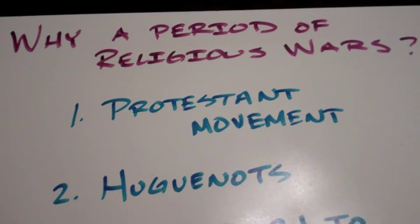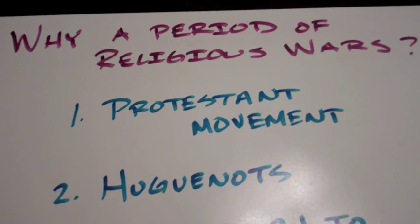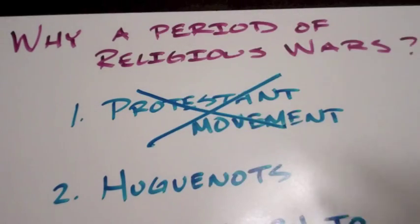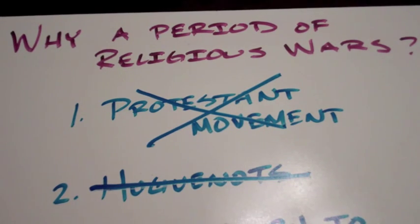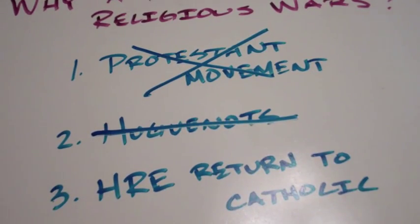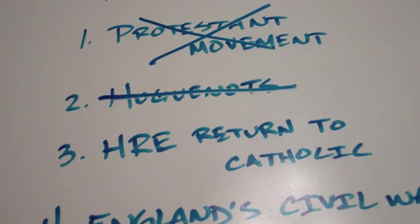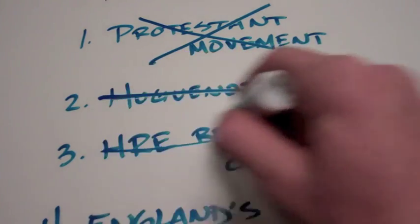So why do we have this outbreak of religious warfare in Europe at this time? Each country has their own reason. In Spain, they saw themselves as the defenders of the Catholic faith, so they reached all over Europe and wanted to knock out all Protestants throughout the whole continent. In France, the French Catholics wanted to destroy the movement of the Huguenots, who are Protestant, and France wanted to keep itself purely Catholic. In the Holy Roman Empire, the Protestant Reformation had spread quite widely by this point, and the Holy Roman Emperor wanted to return to Catholic traditions, which led to war in that region.